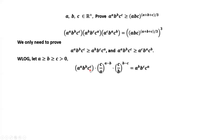We can easily check this equation is true. For example, for the last term: c^c · c^(a−b) · c^(b−c) = c^(c + a − b + b − c) = c^a. The negative c and positive c cancel; positive b and negative b cancel. Only a remains.